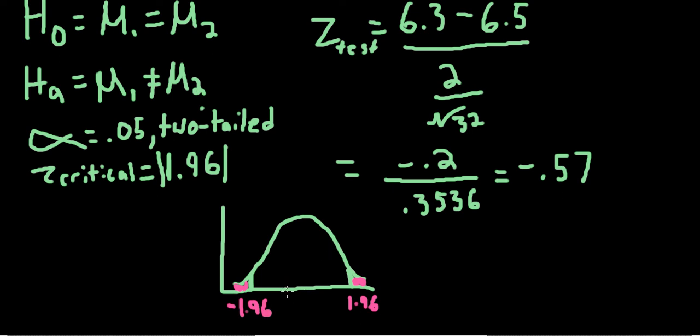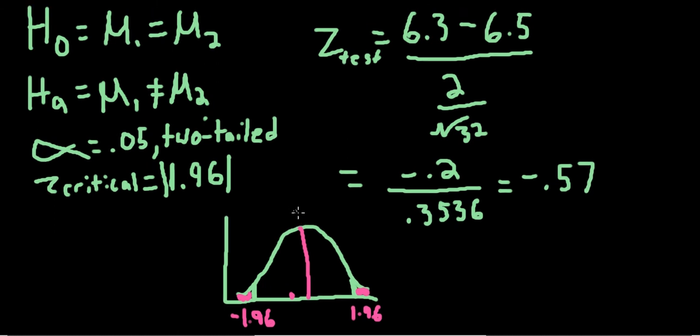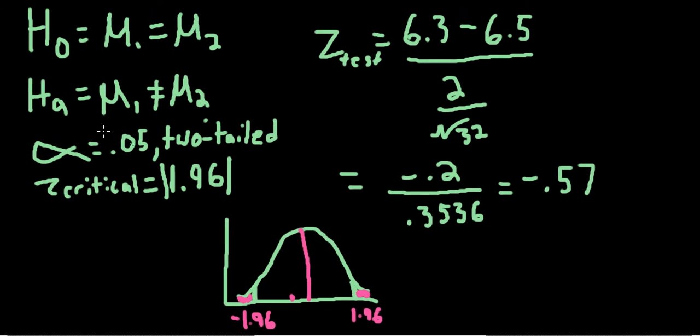We're at negative 0.57, so we're like somewhere over here, relative to the mean of 0 in the standard normal distribution. So we are not able to reject the null hypothesis.